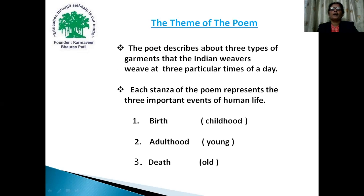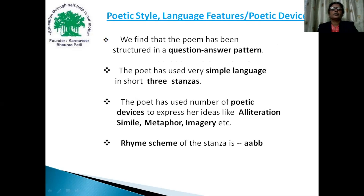The theme of the poem is the next point. The poet describes three types of garments that the Indian weavers weave at three particular times of a day. Each stanza of the poem represents three important events of human life: birth, adulthood, and death. Birth represents the childhood stage, adulthood represents the young stage, and death represents the old stage in human life.